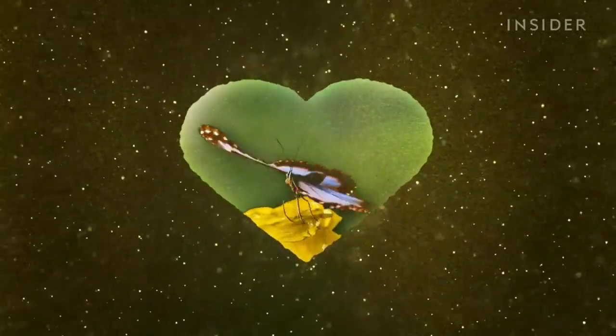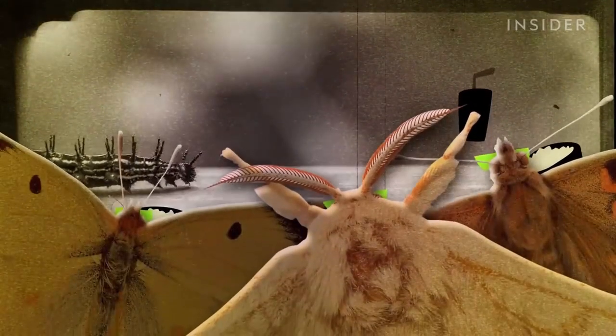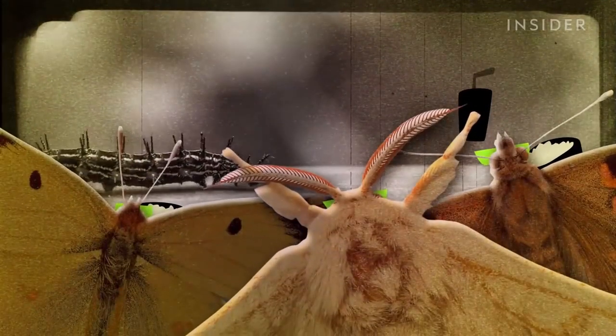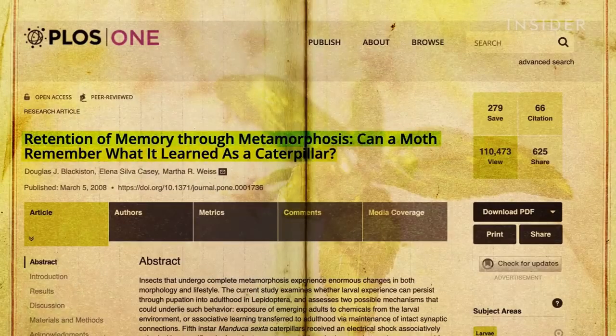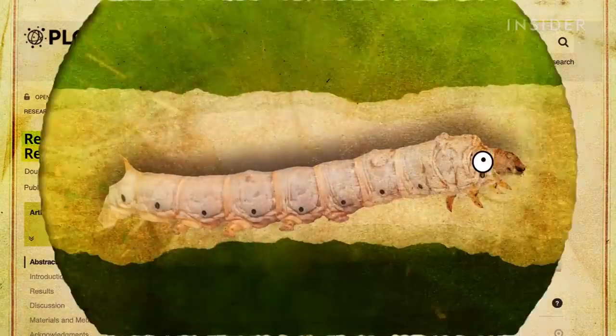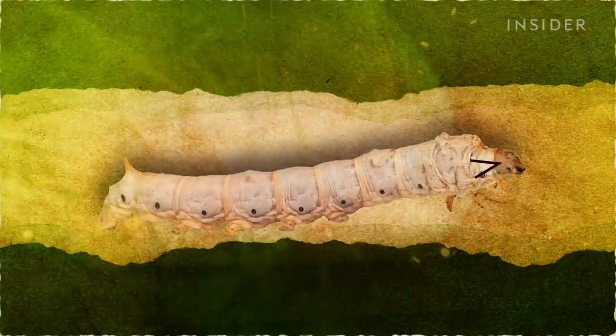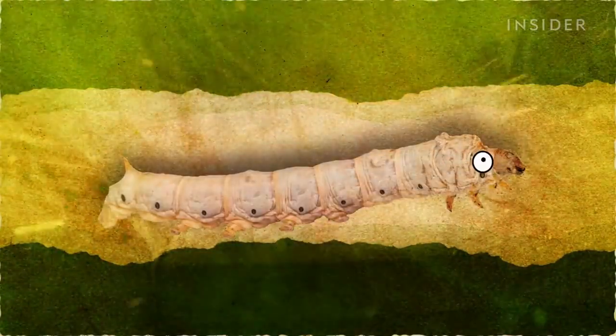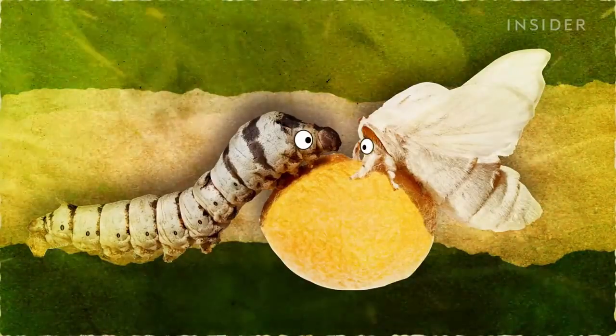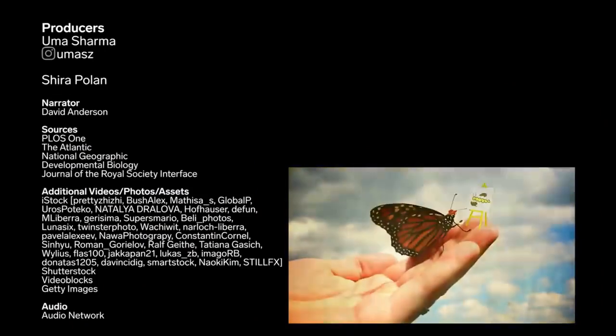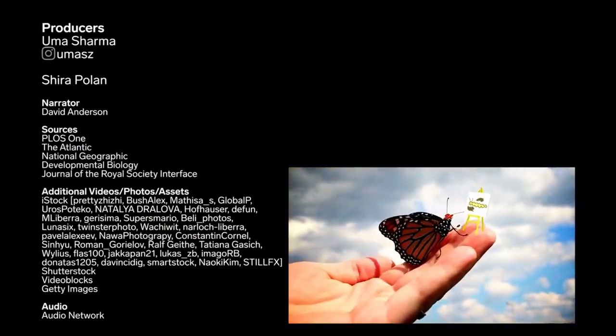But one of the most interesting parts of all, research suggests that butterflies and moths can remember their caterpillar days. In one study, researchers trained moth caterpillars to associate an odor with an electric shock. So whenever the larvae smelled it, they'd move away. But even after they transformed into adult moths, they still avoided the scary smell. It makes you wonder what else they could recall from their younger days.